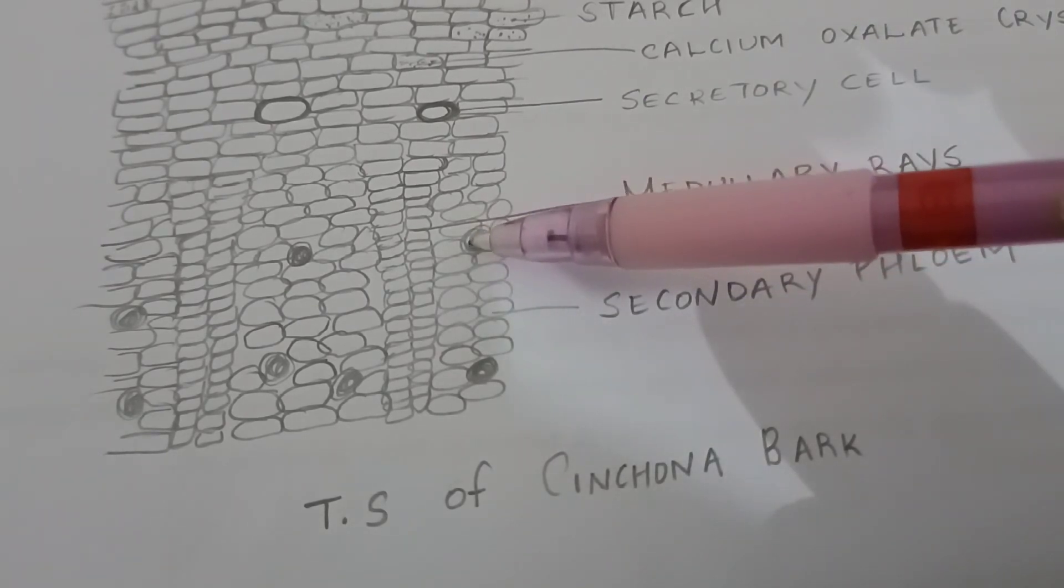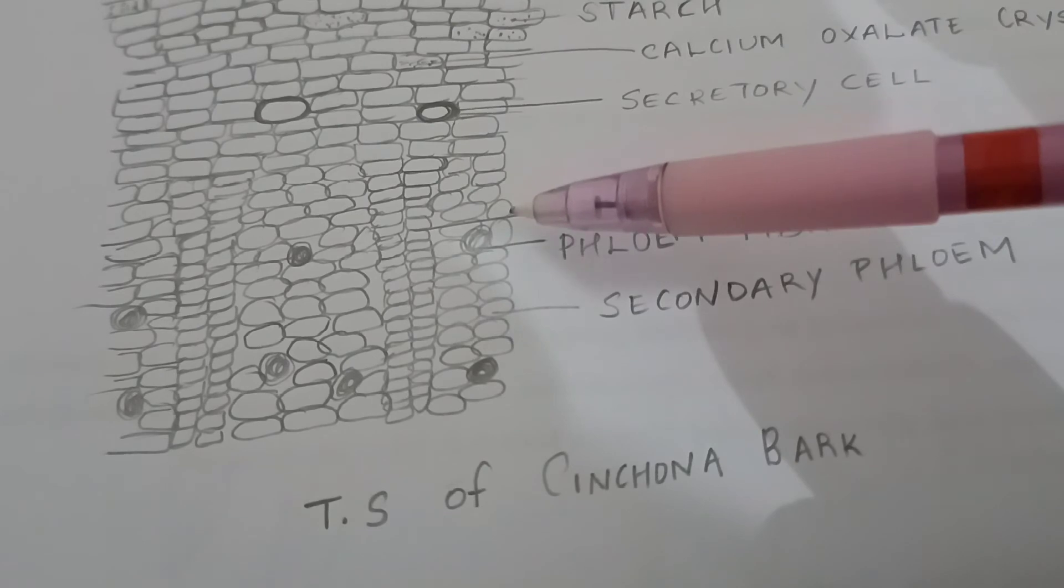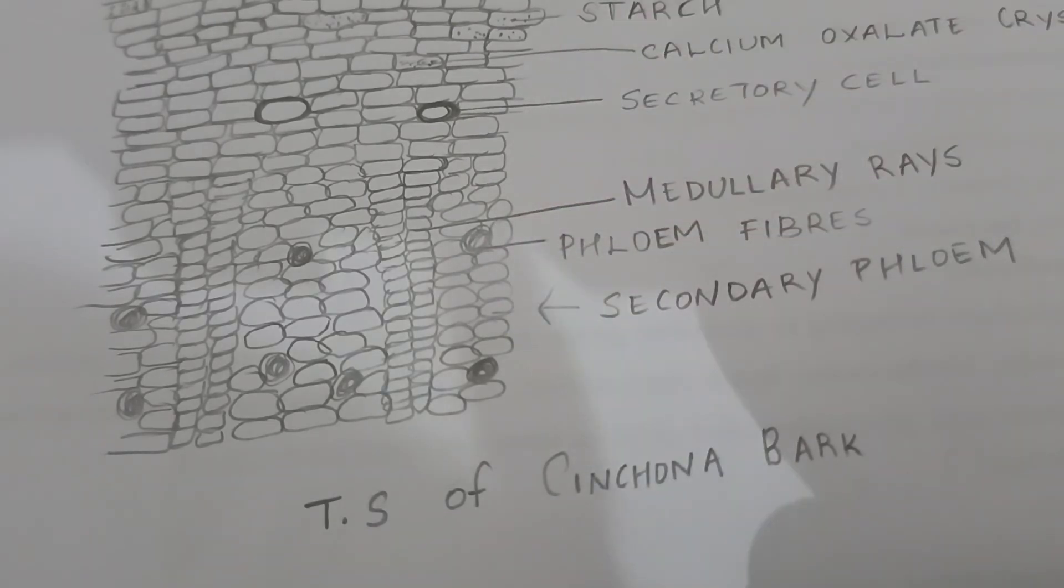Phloem fibers, characteristic of cinchona bark, occur intermingled with phloem parenchyma and in between medullary rays. Fibers are numerous, mostly isolated at times in groups of 2-3, rounded to oval in various sizes, yellow in color, thick-walled, strongly lignified with small lumen and stratifications.